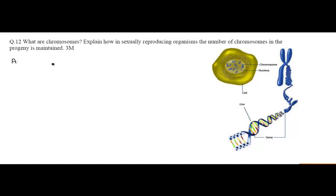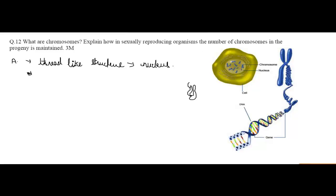So what are chromosomes? Basically, chromosomes are thread-like structures present inside the nucleus within the cell. If we see the location of the chromosomes, they are present inside the nucleus. And if we see the composition of these chromosomes, these are actually made up of DNA and proteins — that is deoxyribonucleic acid. So DNA and protein is the composition of the chromosome.